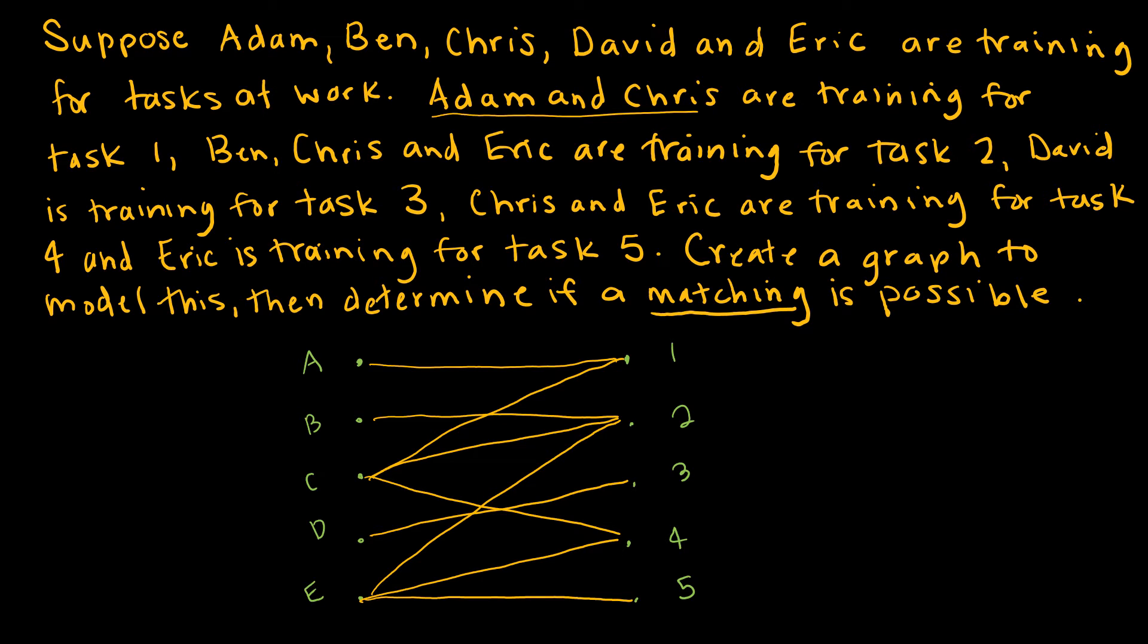Now it says determine if the matching is possible. And for matching to be possible, what I'm looking at is can I assign Adam, Ben, Chris, David, and Eric each one task so that each task gets done. And obviously I have a well-trained person for each of those. So let's switch up colors. And I would start by looking at the singletons because there's only one person who knows how to do task 3. And so David gets task 3. And there's only one person who knows how to do task 5. And so Eric is going to do task 5.